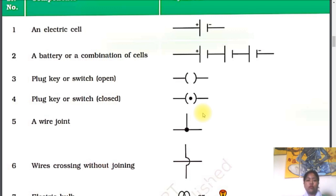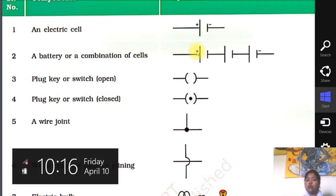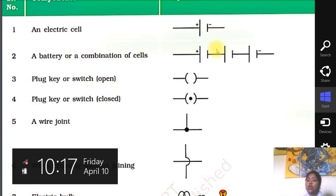If you are having a combination of cells — that means if you are having two cells, three cells — then we just keep on connecting the number of cells in series order. The positive terminal of the first cell and the negative terminal is on the other side. If you want to connect another cell, we connect the positive terminal of the second cell to the negative terminal of the first cell. Similarly, we keep on adding the number of cells we want to add.